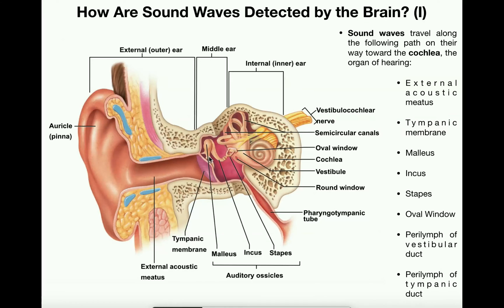On the other side of the tympanic membrane there are directly connected bones called auditory ossicles. There are three auditory ossicles, and in sequence they are the malleus, the incus, and the stapes. They are small bones — in fact, they're the smallest bones in the body. Their job is to amplify the vibrations.